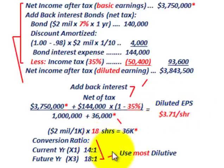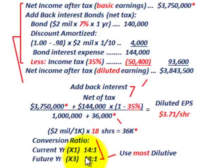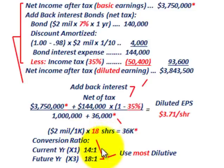Taking our diluted earnings numerator of $3,843,600 and dividing by 1,036,000 shares gives us a diluted earnings per share of $3.71. That completes our diluted EPS where the bonds are converted into common stock.